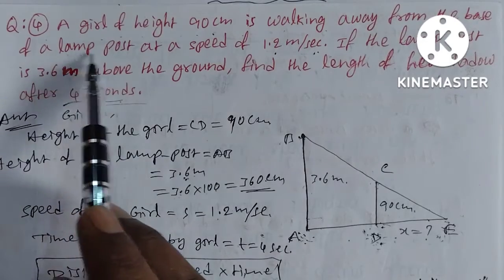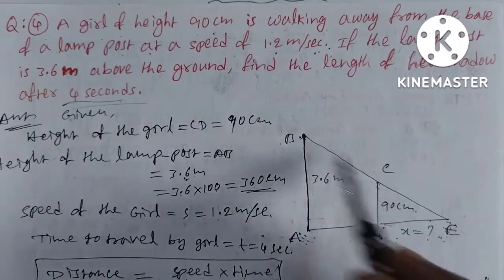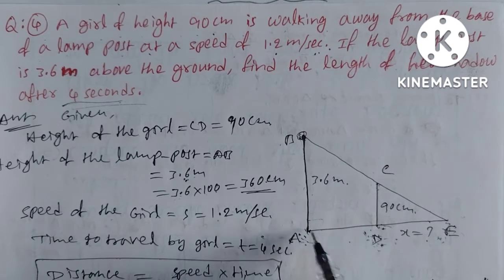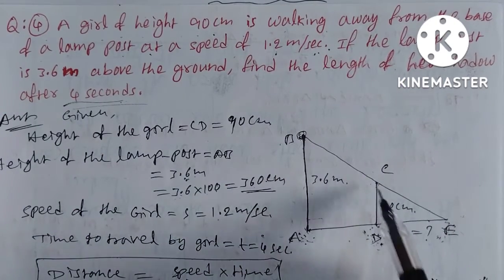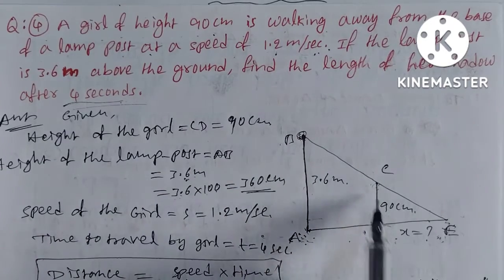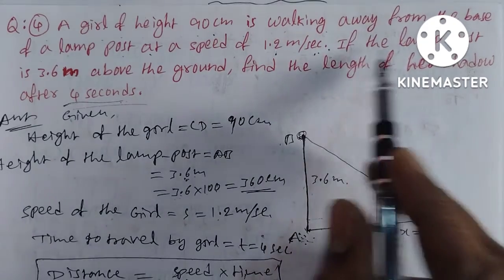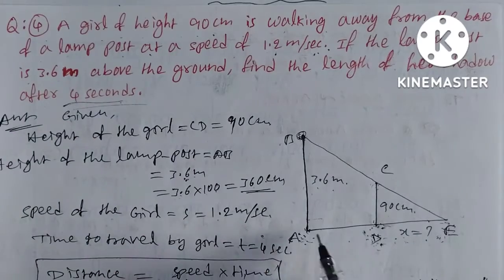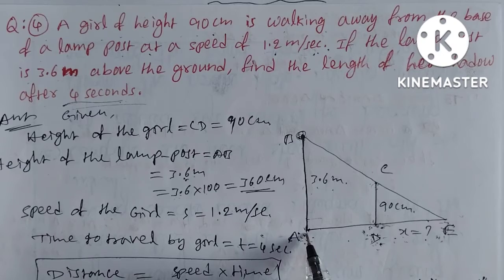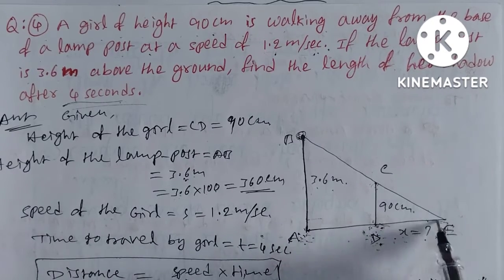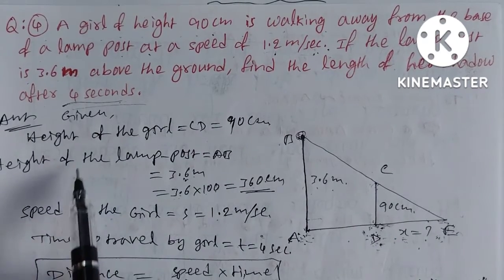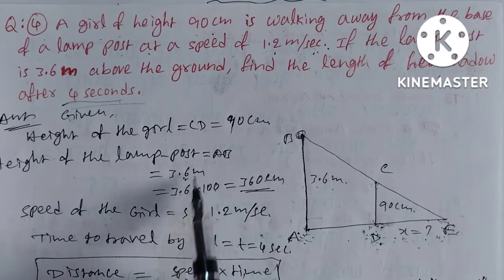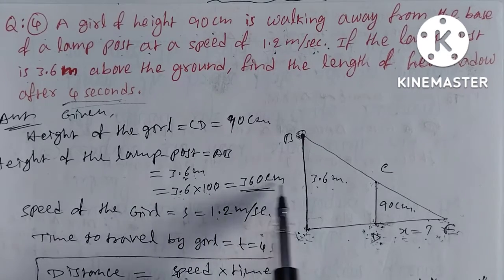From the diagram, AB is the lamp post. The girl is walking away from the base of the lamp post at 1.2 meters per second. She casts a shadow. The lamp post is 3.6 meters high. The girl is 90 centimeters tall. Find the length of the shadow after 4 seconds. Given: height of the girl CD equals 90 cm. Height of the lamppost AB equals 3.6 m, which is 360 cm. Converting: 3.6 times 100 equals 360 centimeters.